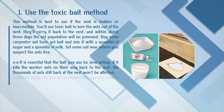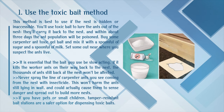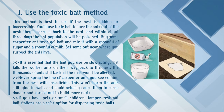Part 2: Removing the Ant Population. Method 1: Use the Toxic Bait Method. This method is best when the nest is hidden or inaccessible. You'll use toxic bait to lure the ants out of the nest; they'll carry it back, and within about 3 days the ant population will be poisoned. Buy some carpenter ant toxic gel bait and mix it with a spoonful of sugar and a spoonful of milk. Set it out near where you suspect the ants live and wait for them to take the bait. It is essential that the bait be slow-acting — if it kills the worker ants on their way back to the nest, the thousands of ants still back at the nest won't be affected. Choose a bait that takes about 3 days to work. Never spray the line of carpenter ants you see with insecticide, as this won't harm the ants still in the nest.